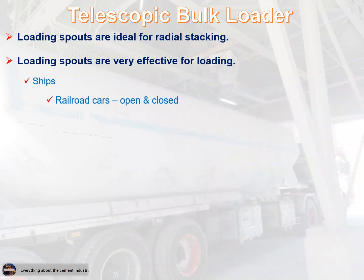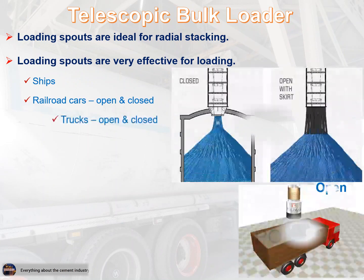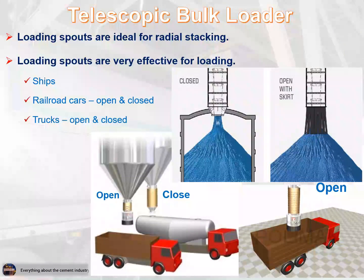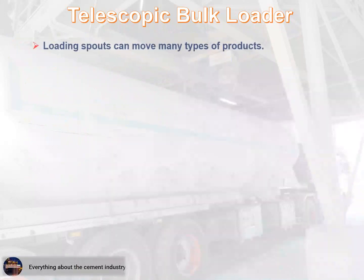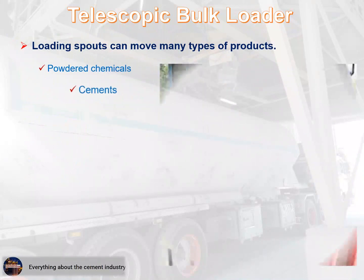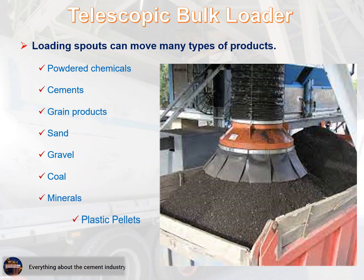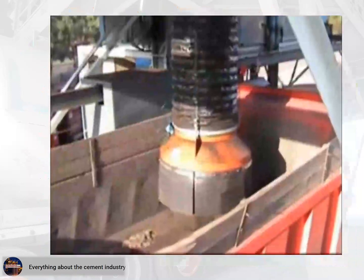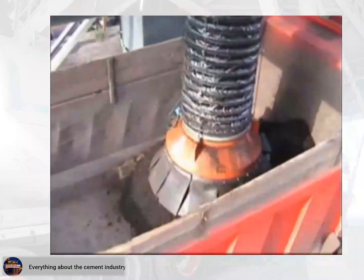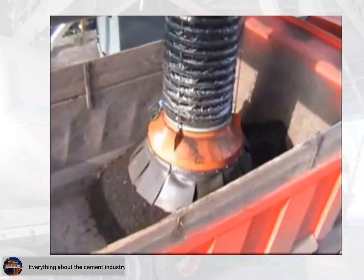Loading spouts are effective for railroad cars, open and closed trucks, open and closed barges, containers, and barrels. Loading spouts can move many types of products: powdered chemicals, cements, grain products, sand, gravel, coal, minerals, plastic pellets, and any other dry product. In this video the difference between using the telescopic bulk loader or not using it is demonstrated, noting the amount of dust in both cases.